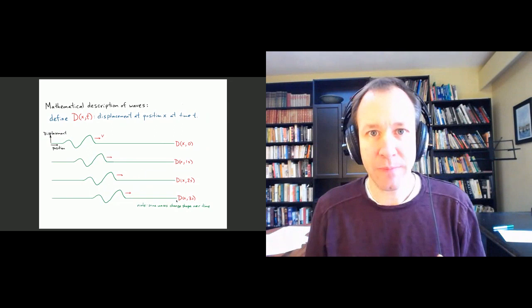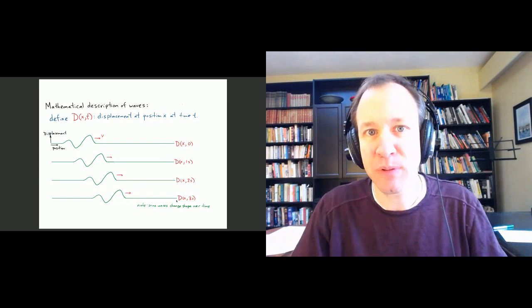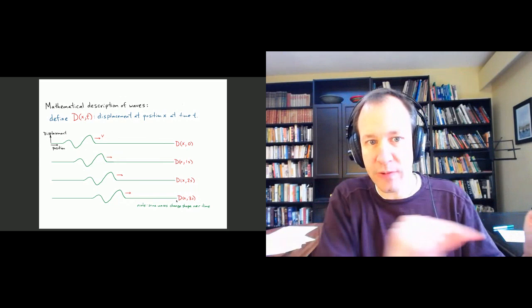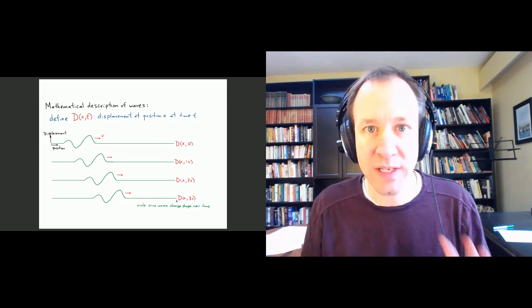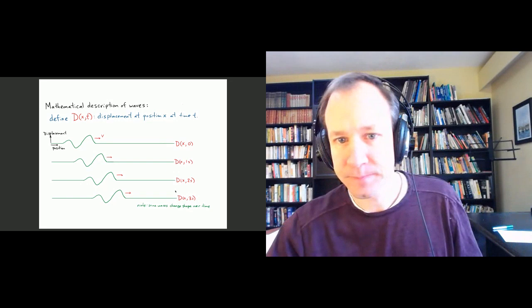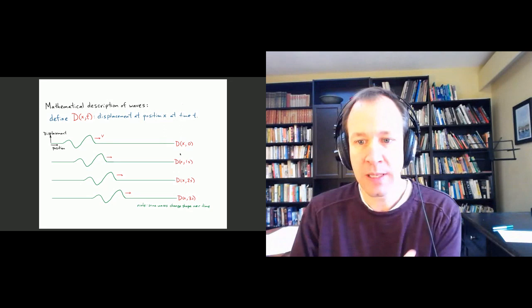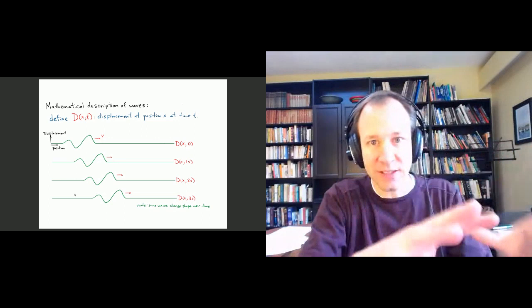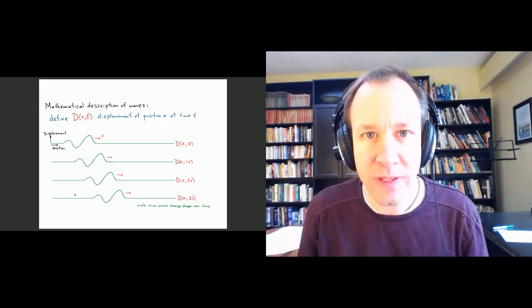Mathematically, we then talked about how to describe one of these waves. We focused on the simple situation of one-dimensional waves — imagine a stretched string. There's one position direction, which we call X along the string. To describe what the wave is doing at any time, we need to give some function of X. There would be a function for time equals zero, a different one for time equals one, and so on. These functions correspond to a particular wave shape that just moves to the right at a certain velocity.